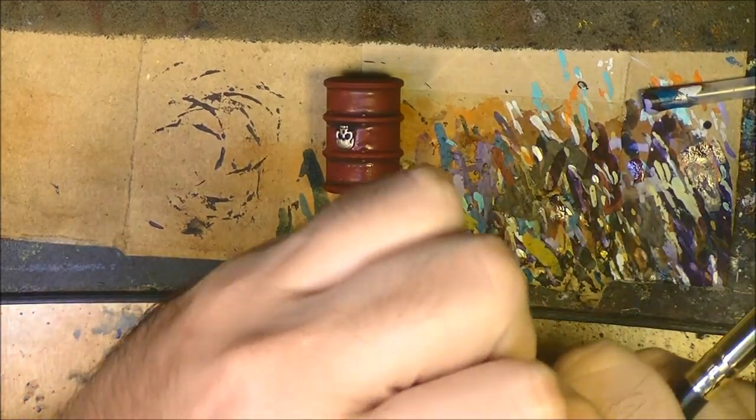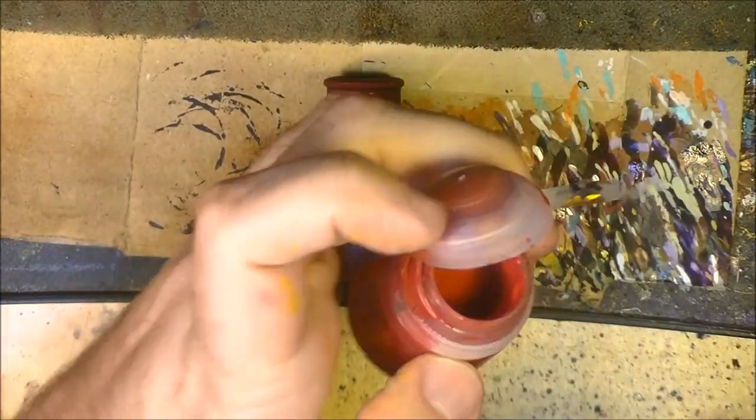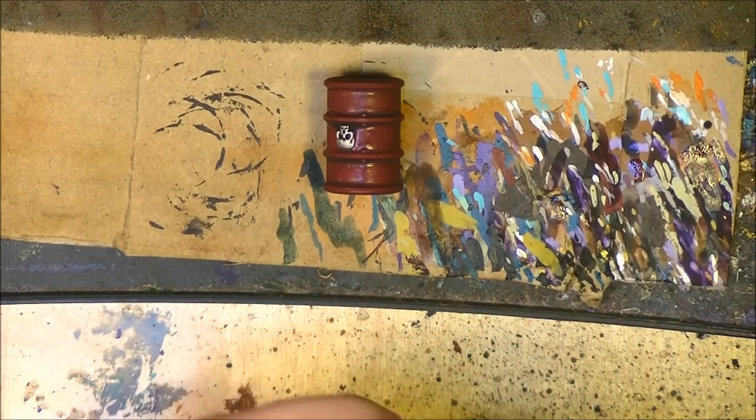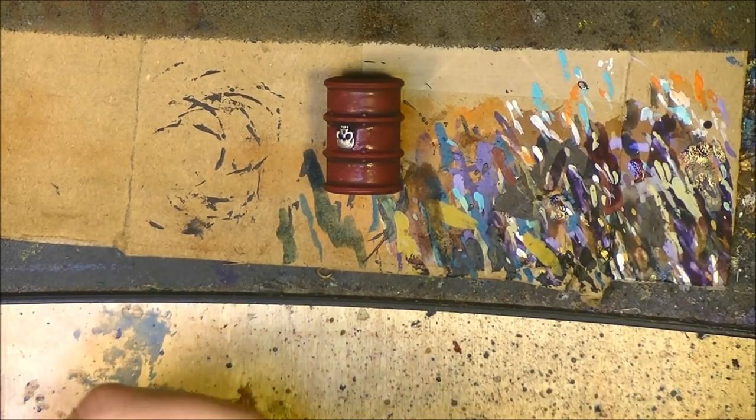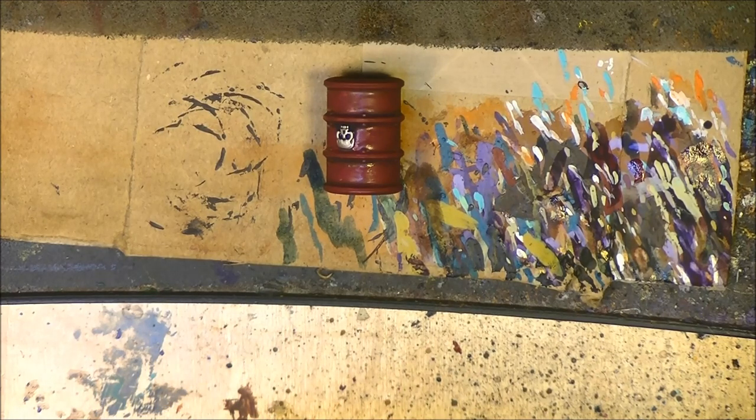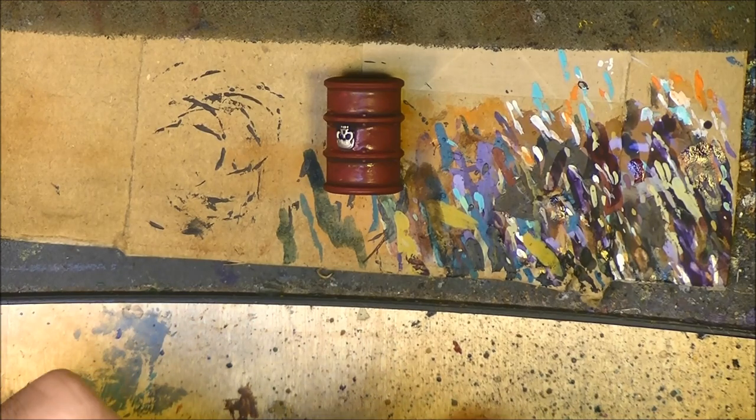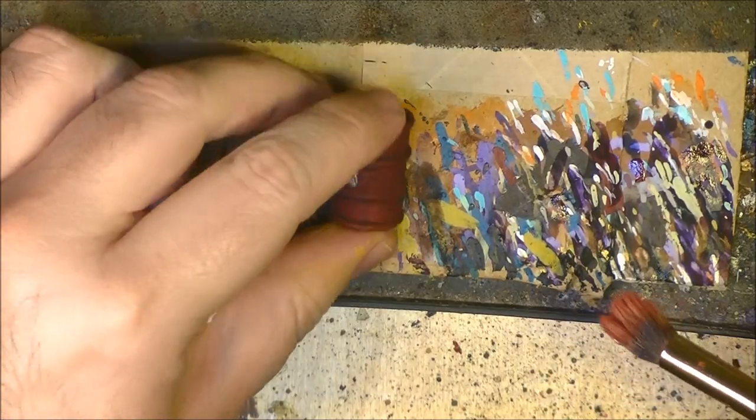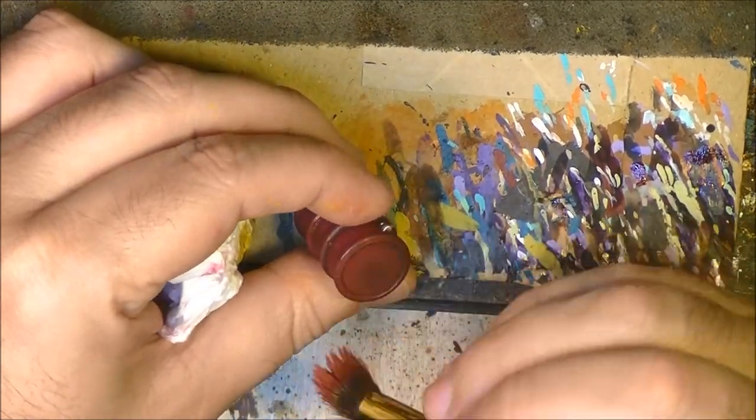Once we've done the yellow, I'll do the same on the reds but this time I'll use mephiston red. Again we do it by dry brushing. As I said, it's better to first do the yellows and then you can do the reds without risk. If you do the other way around, you risk contaminating the yellow with red.